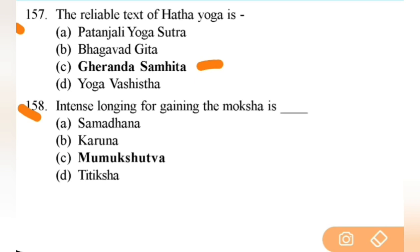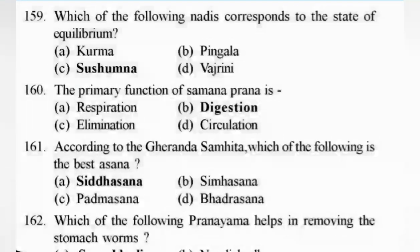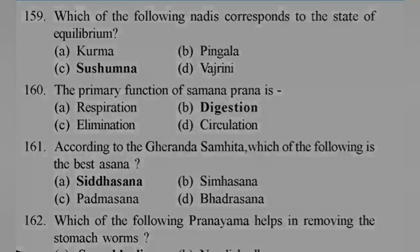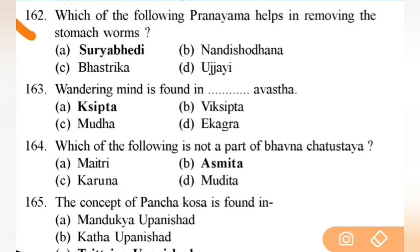Intense longing for gaining Moksha is — right answer is C — Mumukshutva — important question. Next: which of the following Nadis corresponds to the state of equilibrium? Right answer is C — Sushumna Nadi. Next: the primary function of Samana Prana is — right answer is B — digestion. Next: according to Gherand Samhita, the best asana is — right answer is A — Siddhasana.